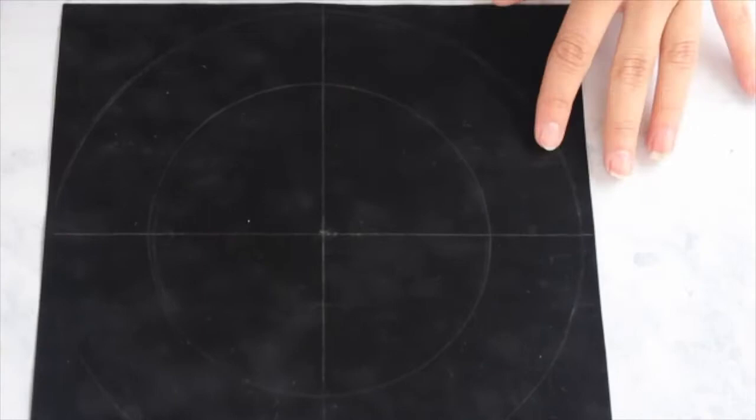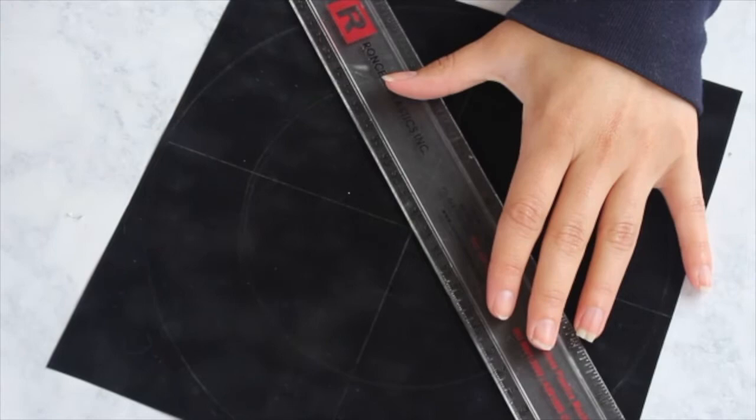So at this point you should be left with what basically looks like a bullseye and then next you're just going to be making an X, again running the ruler right through the center of the paper which is exactly where you've pinpointed that dot right in the middle.